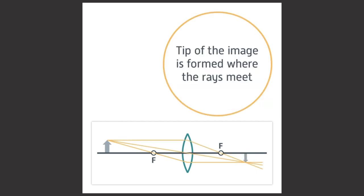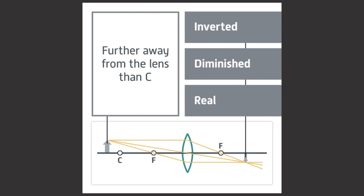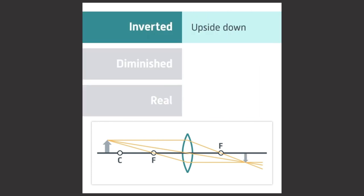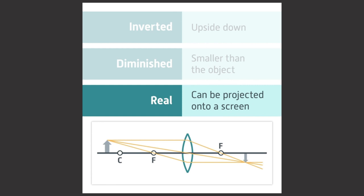This ray diagram shows that if the object is further away from the lens than C, the image formed will be inverted, diminished, and real. Inverted means it is upside down, diminished means it is smaller than the object, and real means it can be projected onto a screen.